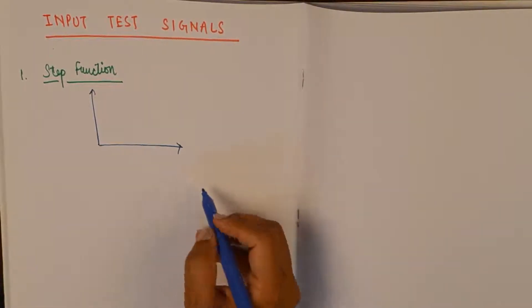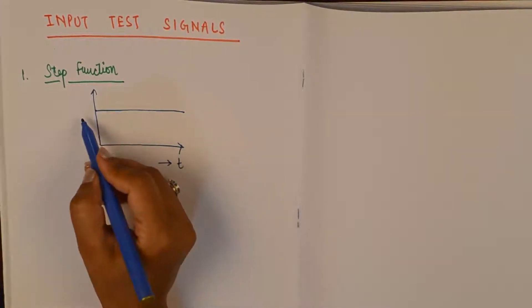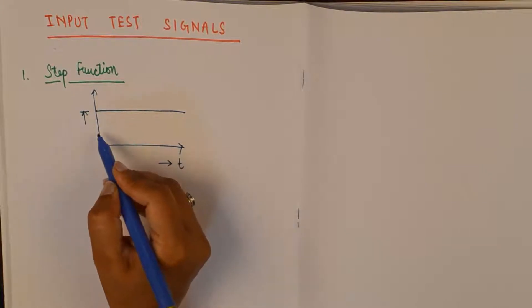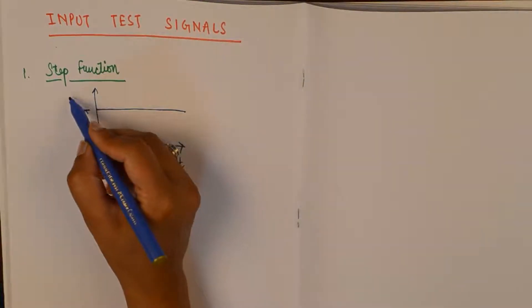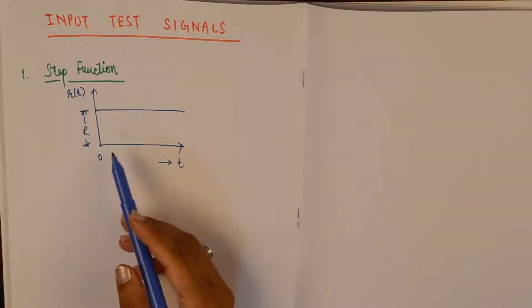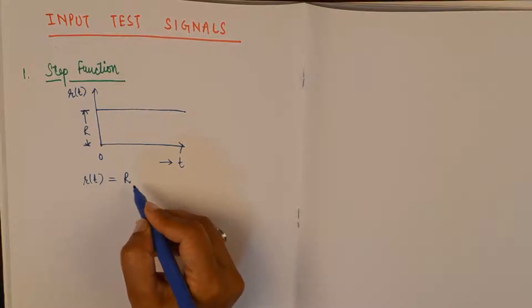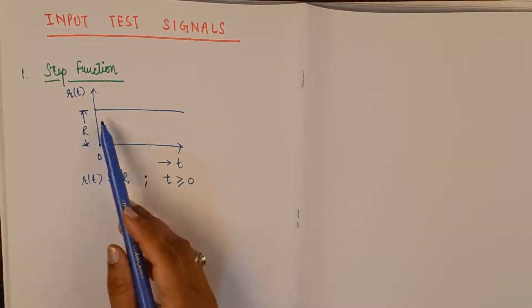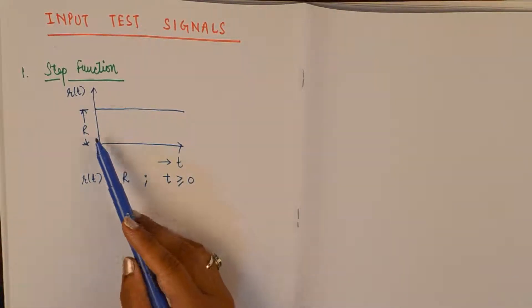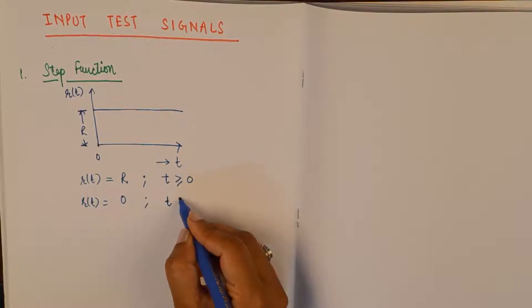Graphically, the step function looks like a step, plotted with respect to time t. The magnitude of this step is given by capital R, marked at the origin. The standard notation is r as a function of time t. Mathematically, R(t) equals capital R for all values of time t greater than or equal to 0, and R(t) equals 0 for all values of t less than 0.